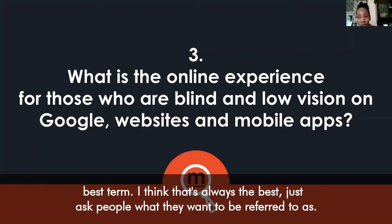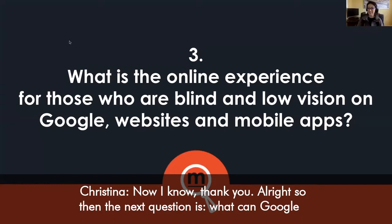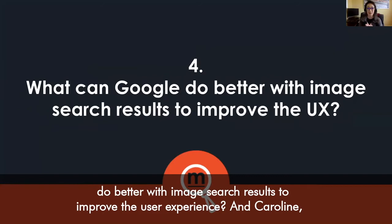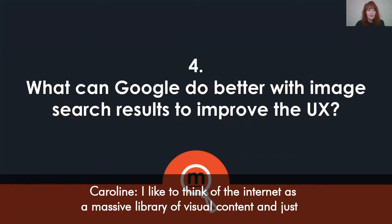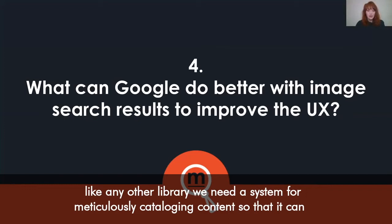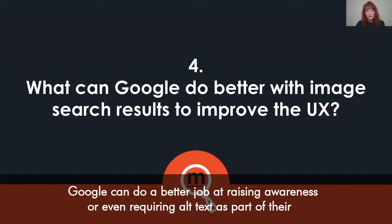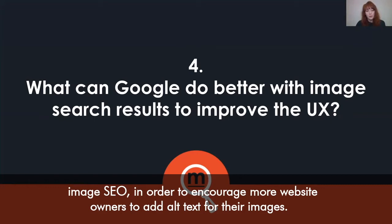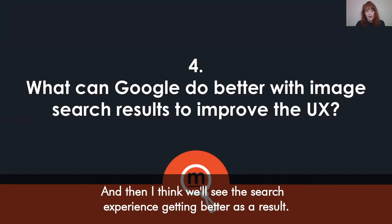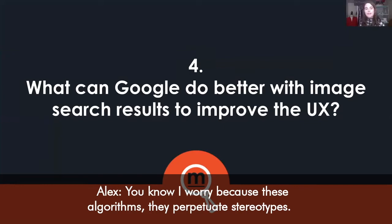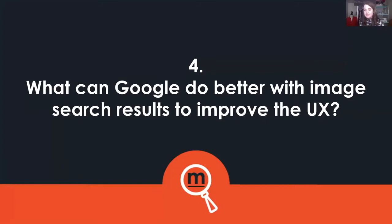The next question is: what can Google do better with image search results to improve the user experience? I like to think of the internet as a massive library of visual content, and just like any library we need a system for meticulously cataloging content so that it can be found and discovered. Google can do a better job at raising awareness, or even requiring alt text as part of their image SEO, in order to encourage more website owners to add alt text for their images — and then we'll see the search experience getting better as a result.